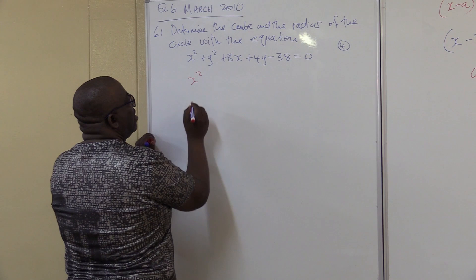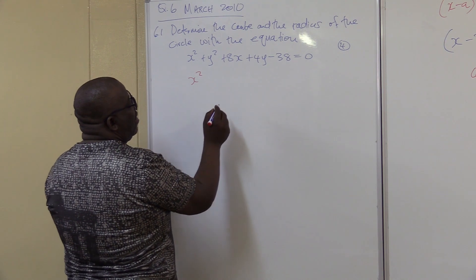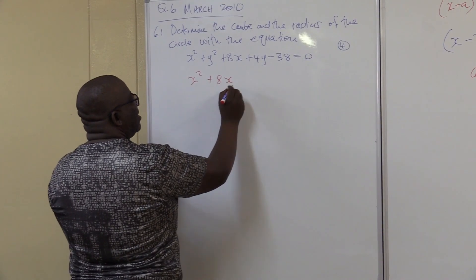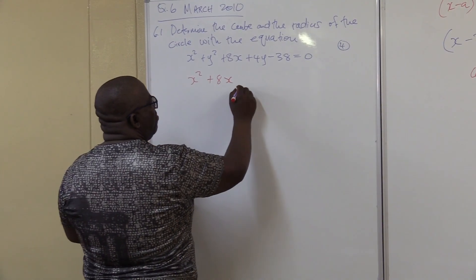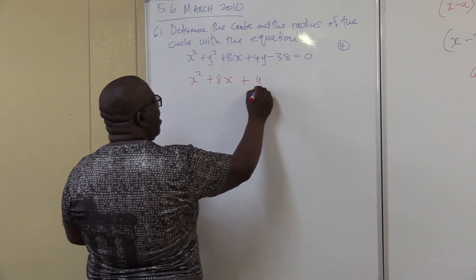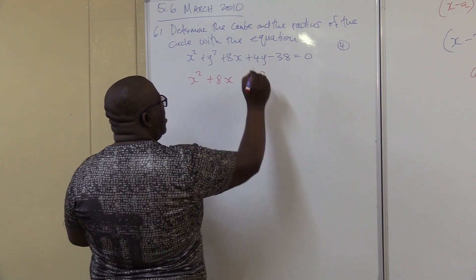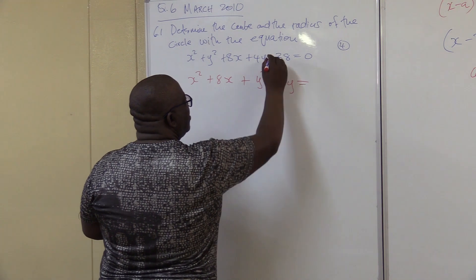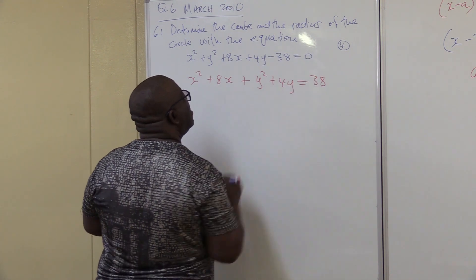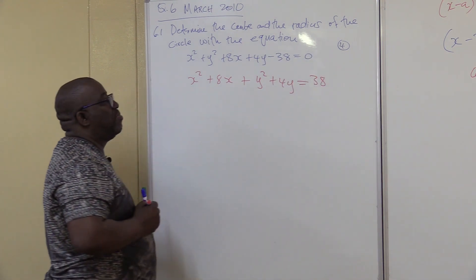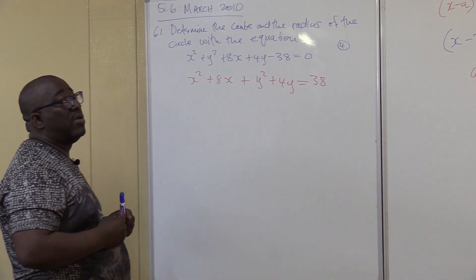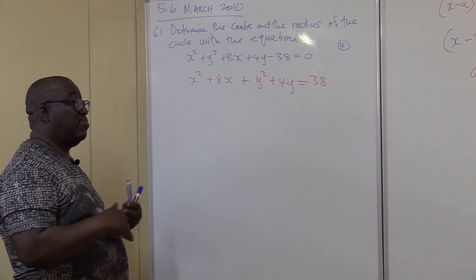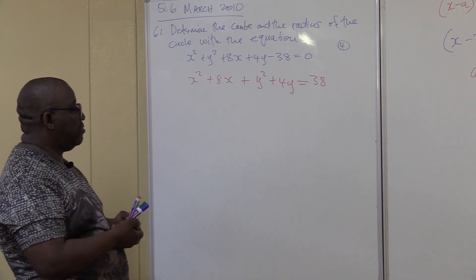It will be: x squared plus 8x, plus y squared plus 4y, equals 38 — take 38 to that side. That's the first step: take the constant term to the other side and put the x's and y's together.